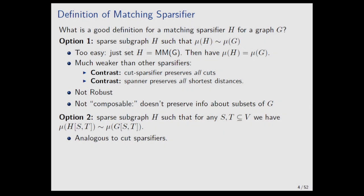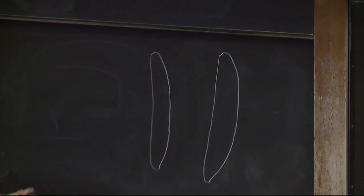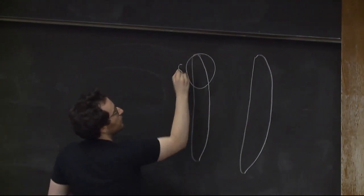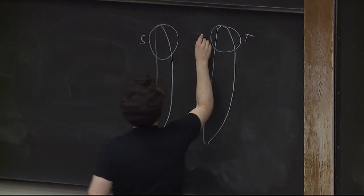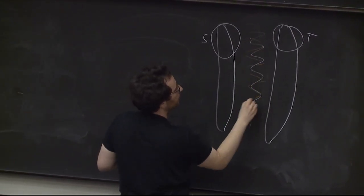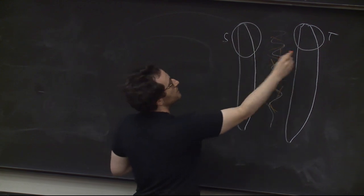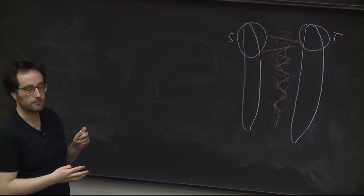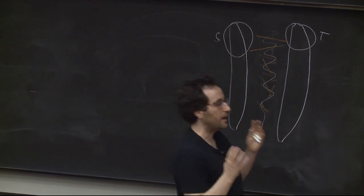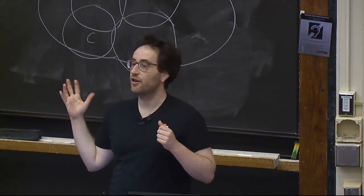So option one — just preserving the maximum matching — is not a good sparsifier. What would be a great sparsifier? For a bipartite graph, a great sparsifier would be: for any subset S on the left and any subset T on the right, the maximum matching on the orange (sparse) edges between S and T should be similar to the maximum matching in the original graph. It doesn't just preserve the maximum matching — it preserves the matching between all subsets. That would be kind of as strong as cut sparsifiers, loosely speaking.